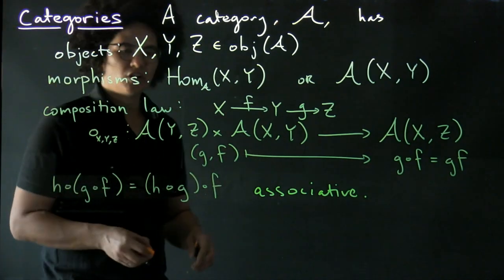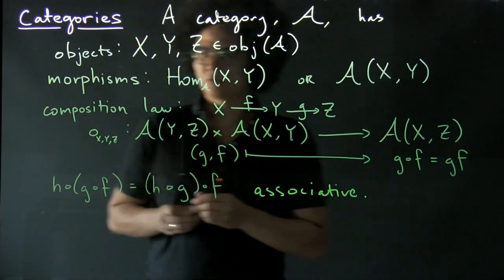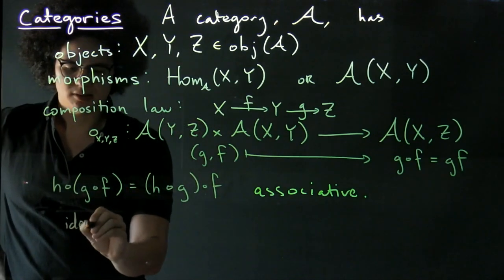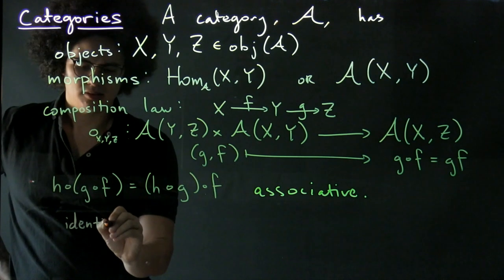And finally, for each object we have a distinguished morphism, the identities.